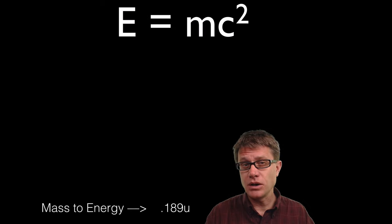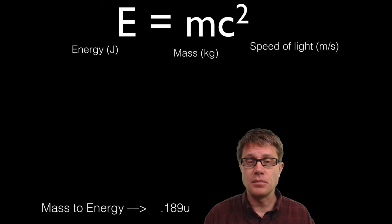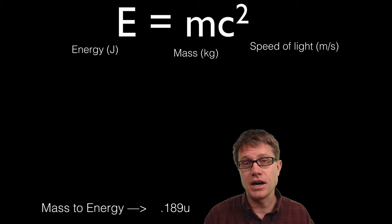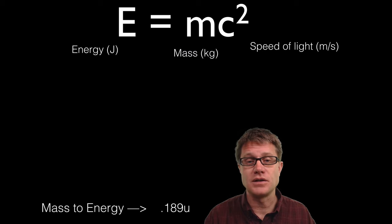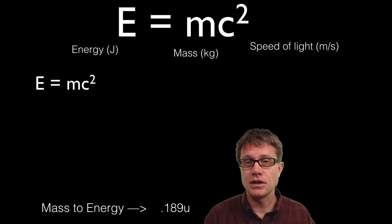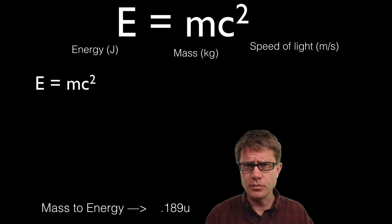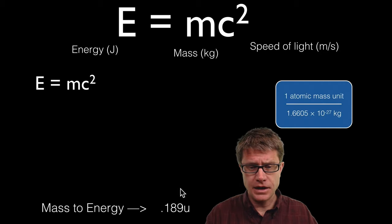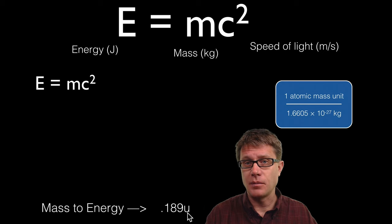Remember the units are going to be important. So energy is going to be measured in joules, mass in kilograms. And then the speed of light is going to be c. And so I set up my equation like this. You can see one problem right away. And that is that my units are in atomic mass units. But I have to use kilograms right here.